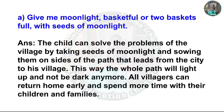Wish 1: Give me a moonlight basket full or two basket full with seeds of moonlight. The child can solve the problems of the village by taking seeds of moonlight and sowing them on the sides of the path that leads from the city to his village. This way the whole path will light up and not be dark anymore, and all villagers can return home early and spend more time with their children and families.